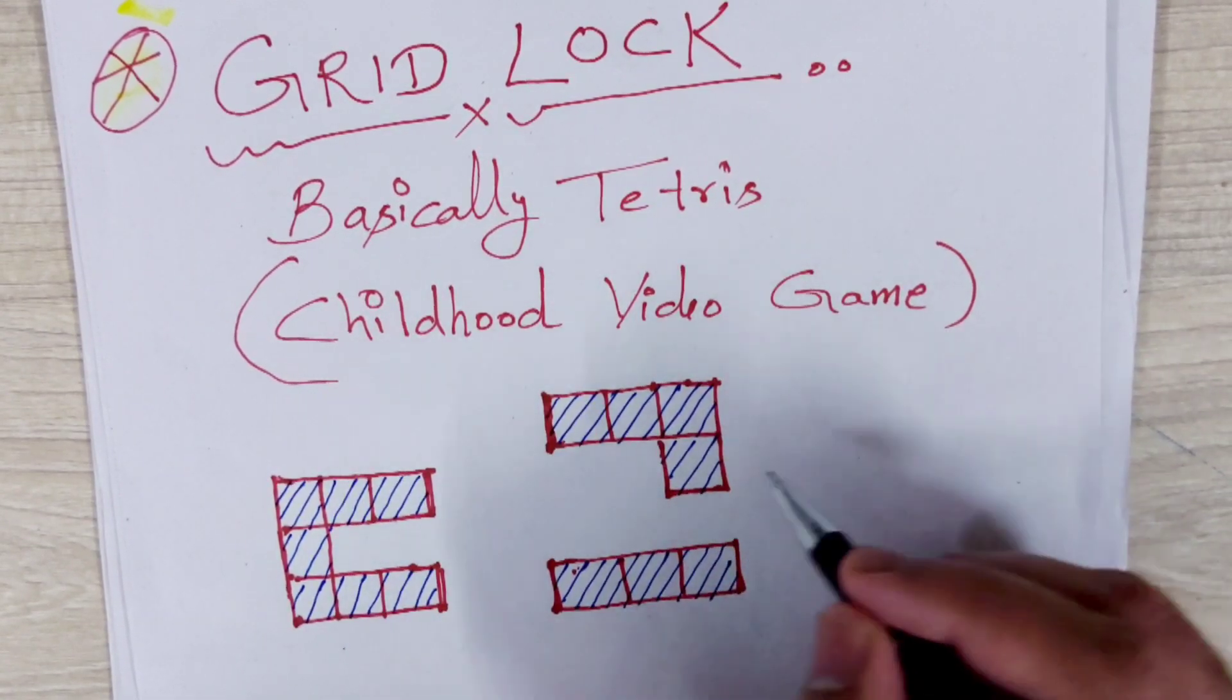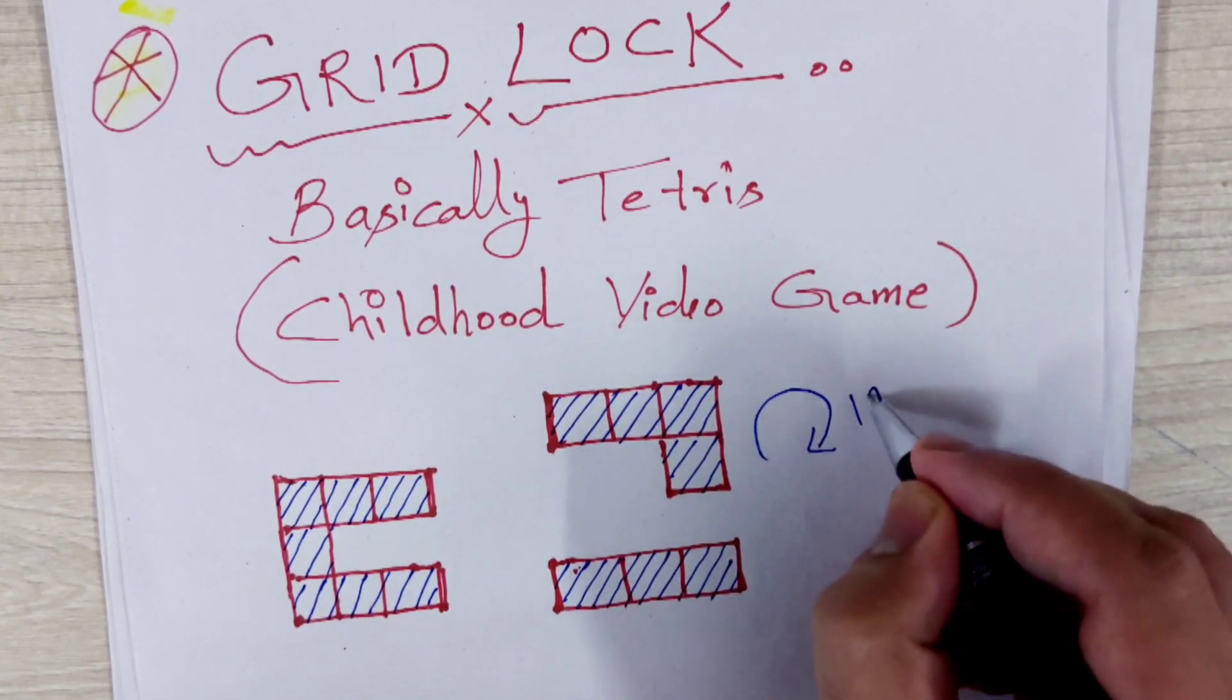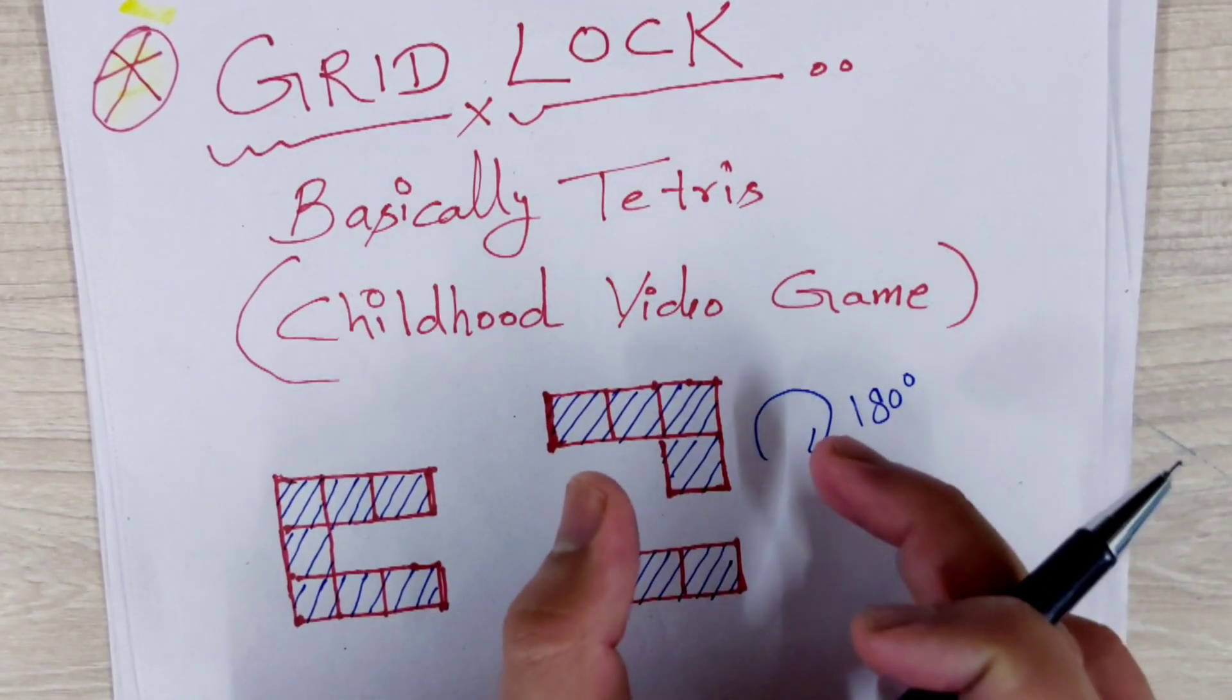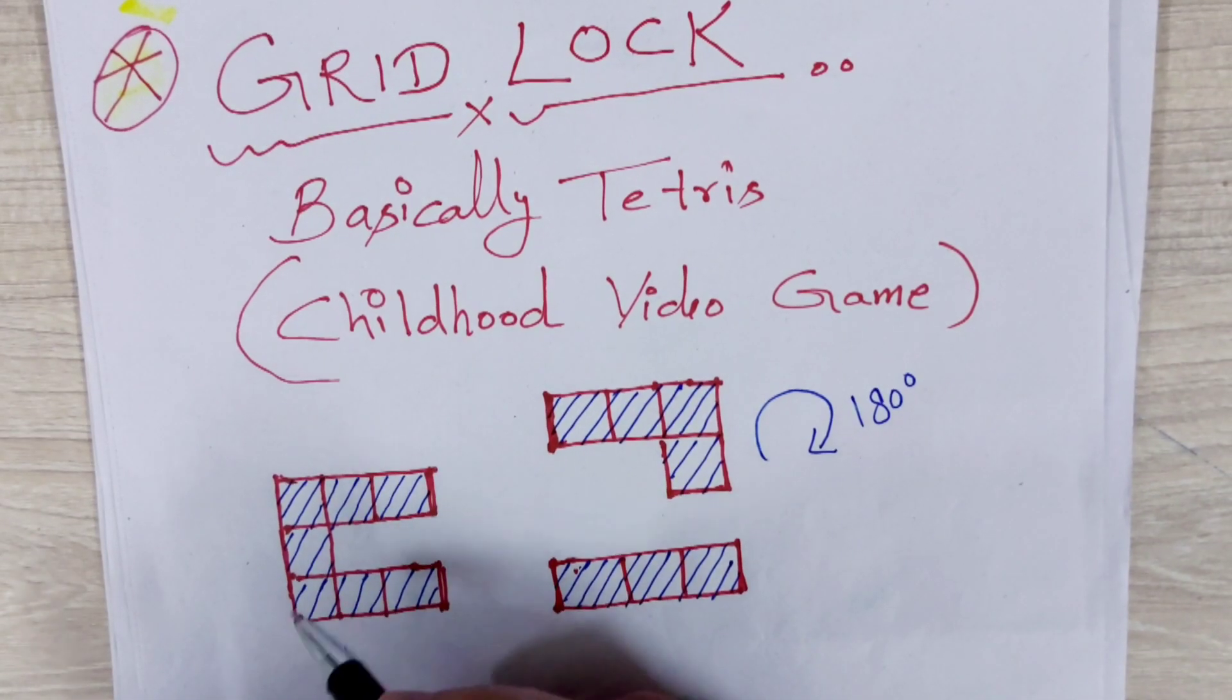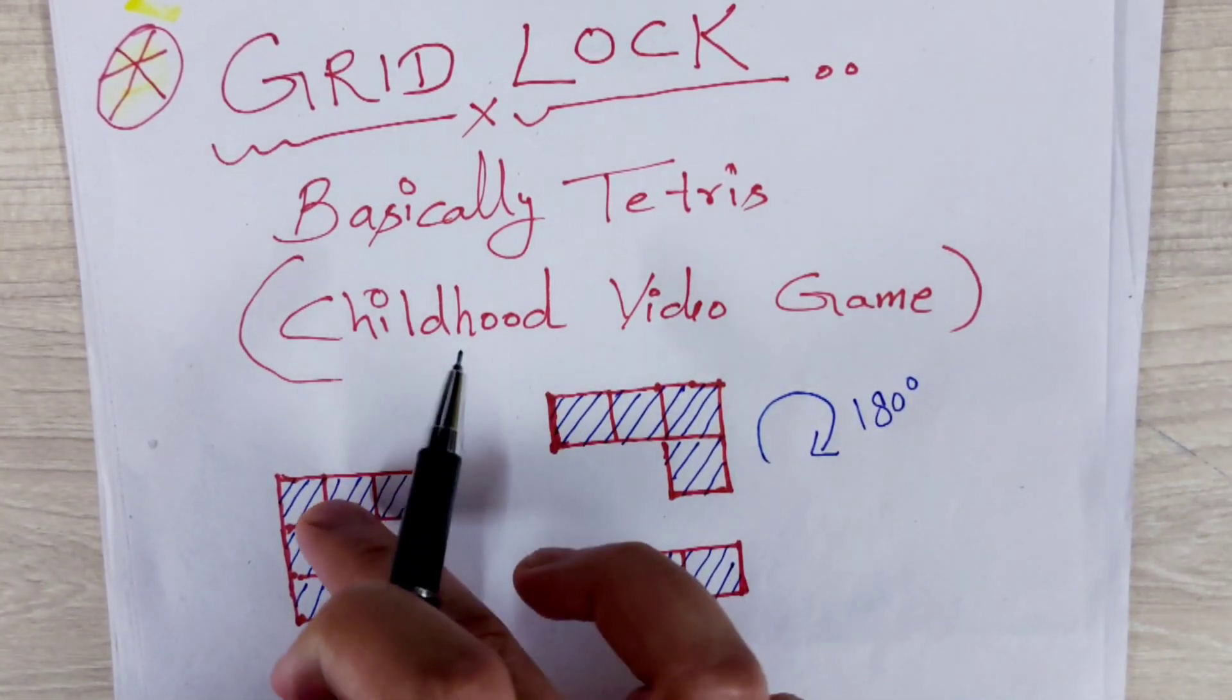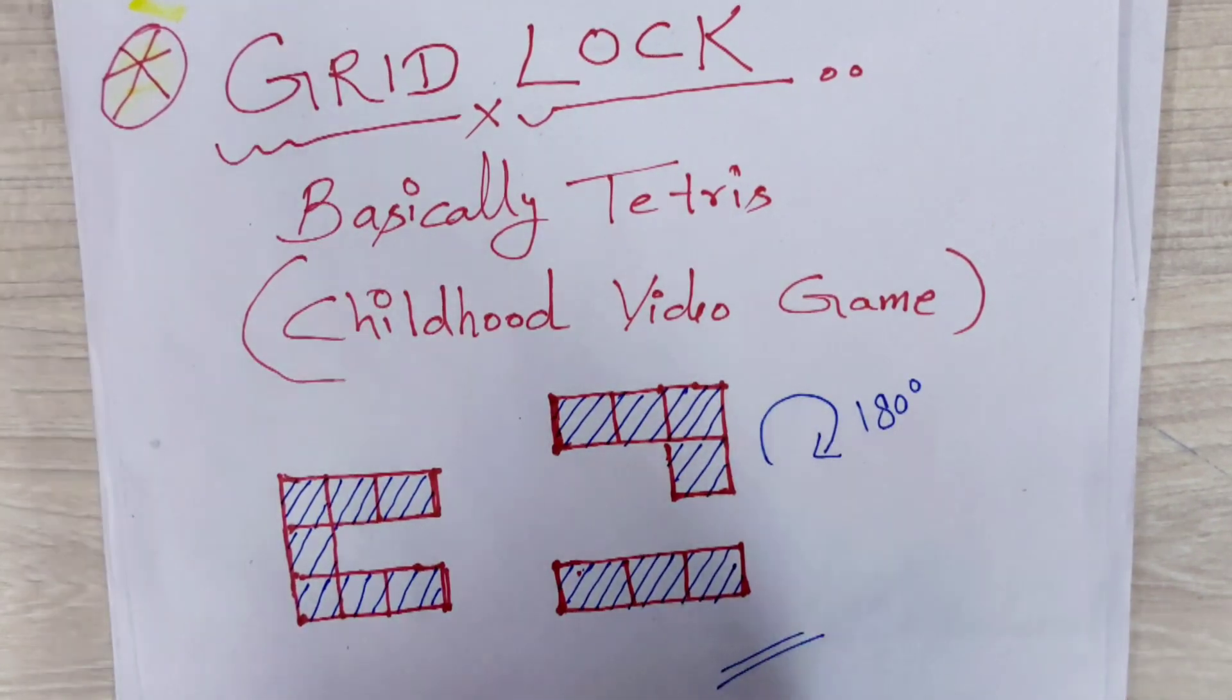Rotate this element by 180 degrees right or clockwise like this. So it will be like somewhat like this. Can you imagine? And then drag and drop to here. So that much area will get filled. Now only that much is remaining. So just do a simple drag and drop here. So level 1 has been completed. Got it guys?